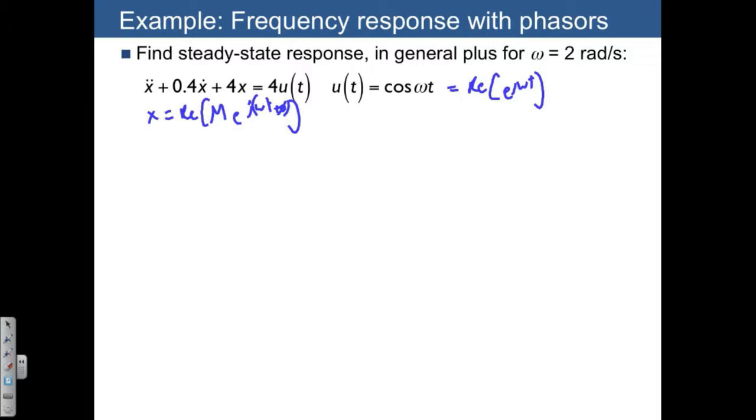So we need x double dot, which is just going to be m times j omega squared times e to the j omega t plus phi, plus 0.4 times j omega times e to the j omega t plus phi.